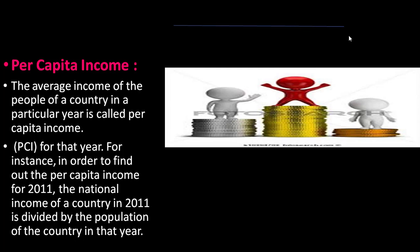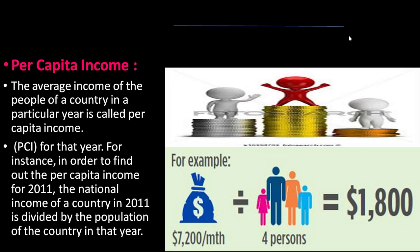The average income of the people of a country in a particular year is called per capita income — we can also say it as individual income. For instance, to find out the per capita income of 2011, the national income of a country in 2011 is divided by the population of that country in that year.